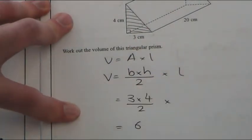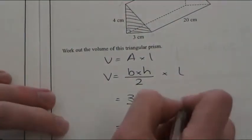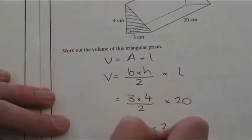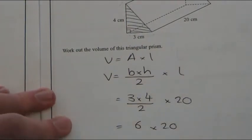Now, remember, we're going to times it by the length of the prism, which we can see here is twenty. So, six times twenty is one hundred and twenty.